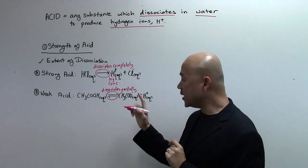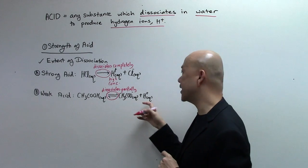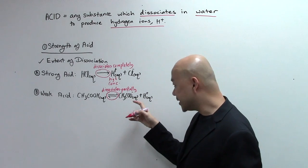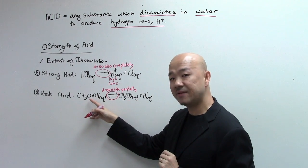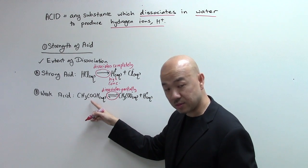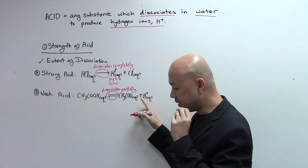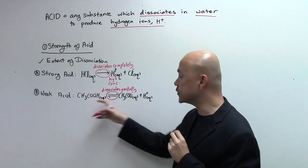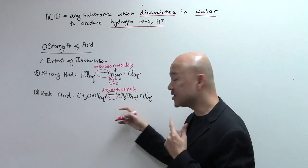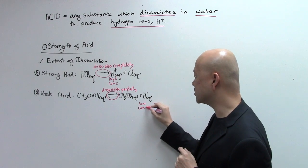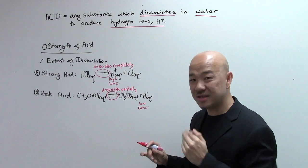Here's why: for every 100 molecules of ethanoic acid, when it dissociates, we should have 100 ethanoate ions and 100 H-plus ions. However, these two ions love to combine back and return to form CH3COOH molecules. As a rule of thumb, less than 1% of the acid molecules are actually dissociated. So most of them are back on the left side, and we end up with a low concentration of H-plus ions — that's why we call it a weak acid.